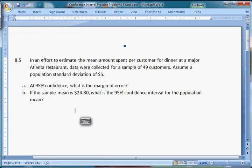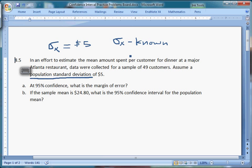In an effort to estimate the mean amount spent per customer for dinner at a major Atlanta restaurant, data were collected for a sample of 49 customers. Assume a population standard deviation of $5. And that right there tells us which one it is. Those are words that should pop out at you. Population standard deviation, that's also known as sigma X.